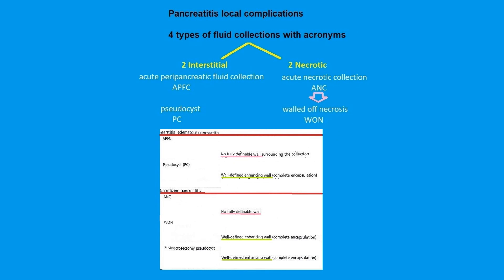The two fluid collections in the early phase don't have a definable wall. In their later phases — the pseudocyst or the walled-off necrosis — they have a well-defined enhancing wall, typical for any inflammatory process where a fluid collection gets walled off. The post-necrostomy pseudocyst is very rare — it's a cyst arising after resection of pancreas tissue — and it also has a well-defined enhancing wall.